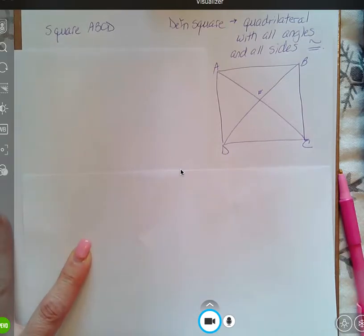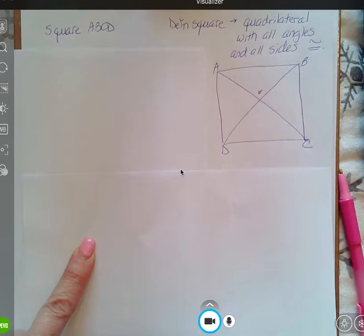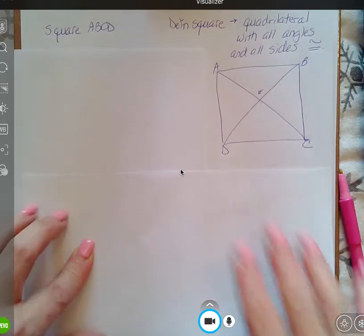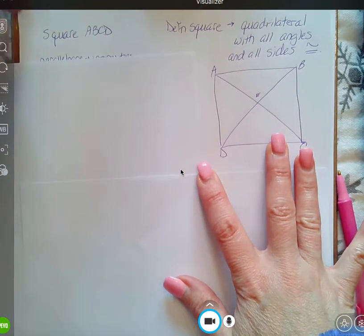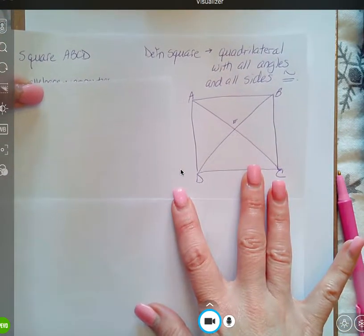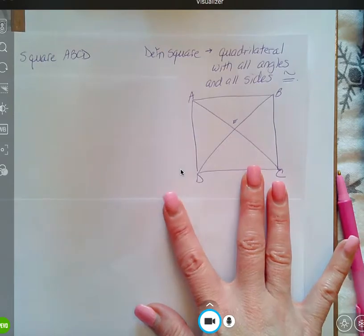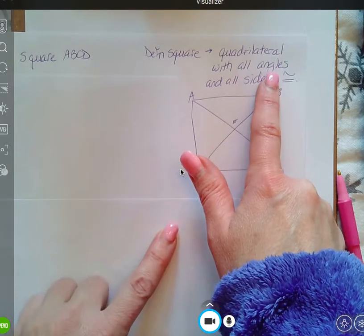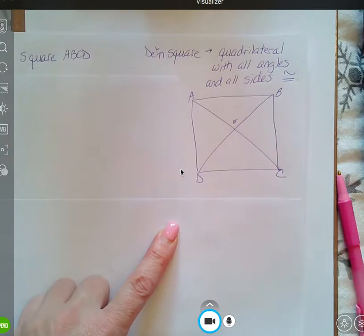Let's take a look today at the square and the different properties that a square has. Let's first begin with the definition of a square. So, a square is a quadrilateral with four sides. A square is a quadrilateral, and also, all of the angles are congruent, and all of the sides are congruent.